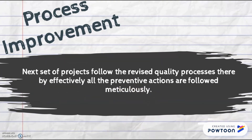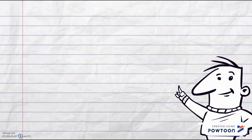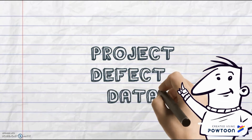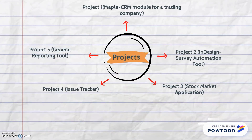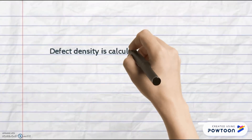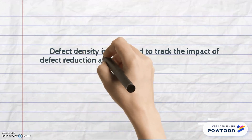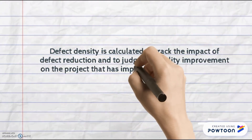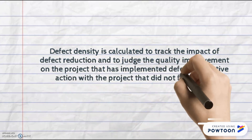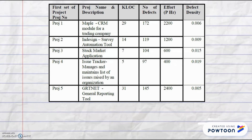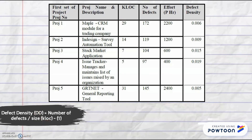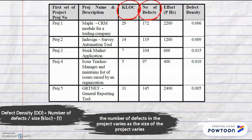Therefore, the next set of projects follows the revised quality process, whereby all preventive actions are effectively followed. Now let's move on to the selected projects. These are the selected projects chosen to test this thesis. The defect density is calculated to track the impact of defect reduction and to judge the quality improvement on projects that implemented defect preventive action compared to projects that did not follow any preventive action. Based on the table, the project size can be measured either in terms of kilo lines of code produced or in terms of function points. For the projects taken for the study, the project size is measured in terms of kilo lines of code.